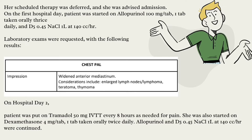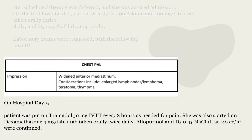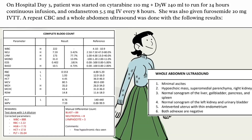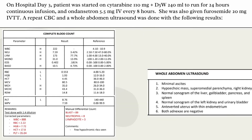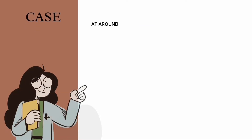On hospital day 3, the patient was started on vincristine 1.10 milligrams with D5W 40 mL to run for 24 hours continuous infusion, and cytarabine 5.5 milligrams IV every eight hours. She was also given pantoprazole 20 milligrams IV. A repeat CBC and whole abdomen ultrasound were done with the following results.